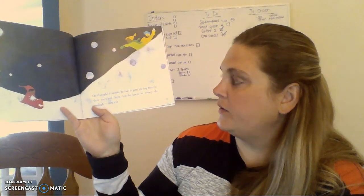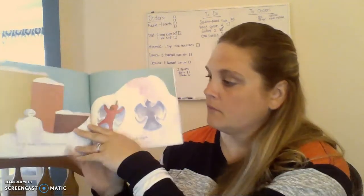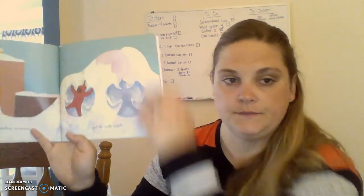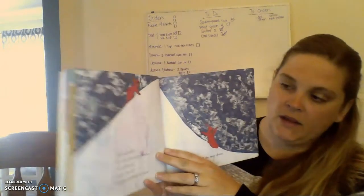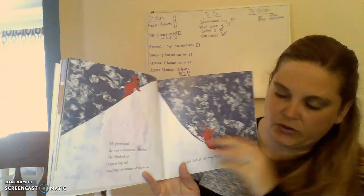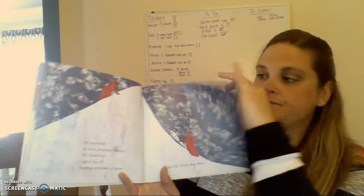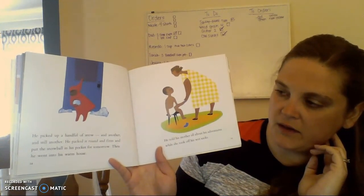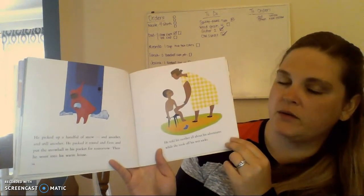He thought it would be fun to join the big boys in their snowball fight, but he knew he wasn't old enough. Not yet. So he made a smiling snowman and made angels. He pretended he was a mountain climber. He climbed up a great big tall heaping mountain of snow and slid all the way down. He picked up a handful of snow and another and still another, packed it round and firm, and put the snowball in his pocket for tomorrow. Then he went in his warm house.